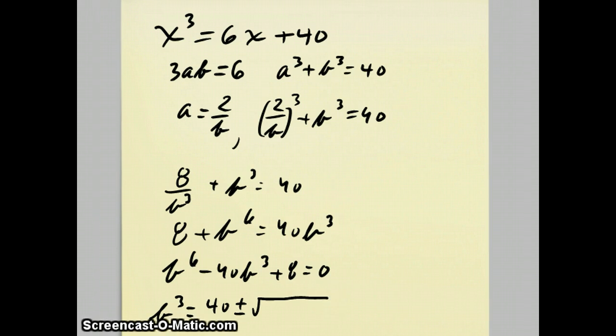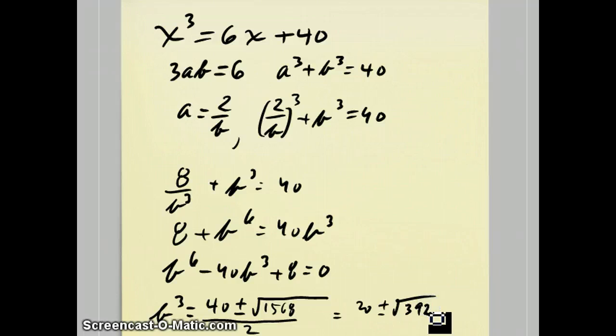b squared minus 4ac. So we can see in this case is 1568 over 2. This simplifies to 20 plus or minus the square root of 392.